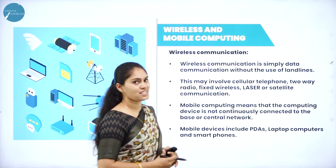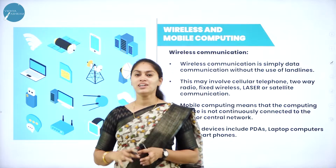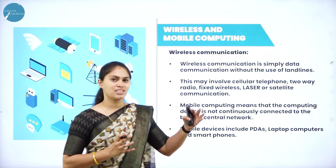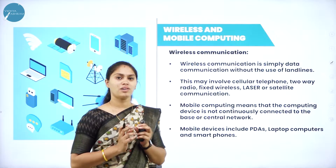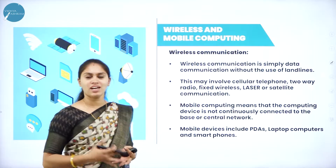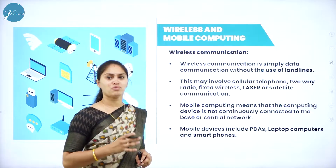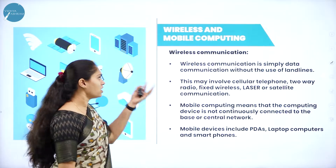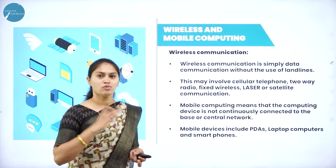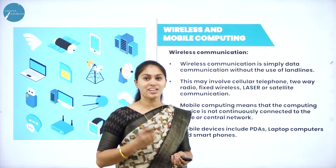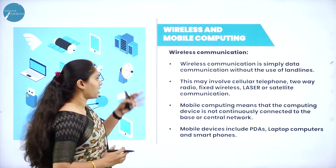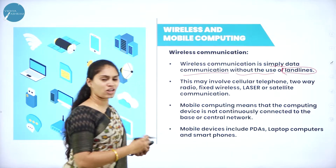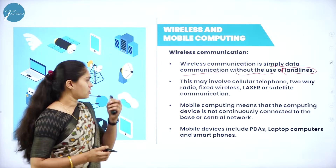We will see what is meant by wireless communication. As we know, we have a sender and a receiver. When data transmission from sender to receiver takes place with the help of a channel, cable, or wire, we call it connection-oriented. But if data is sent from sender to receiver without any cables or channels, that is considered wireless communication.